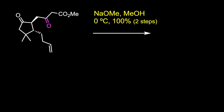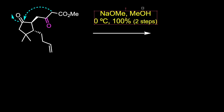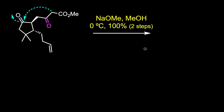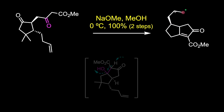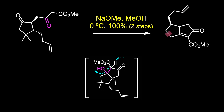The ketoester was cyclized by the action of freshly prepared sodium methoxide in methanol to give the corresponding ester during the Dieckmann condensation reaction.